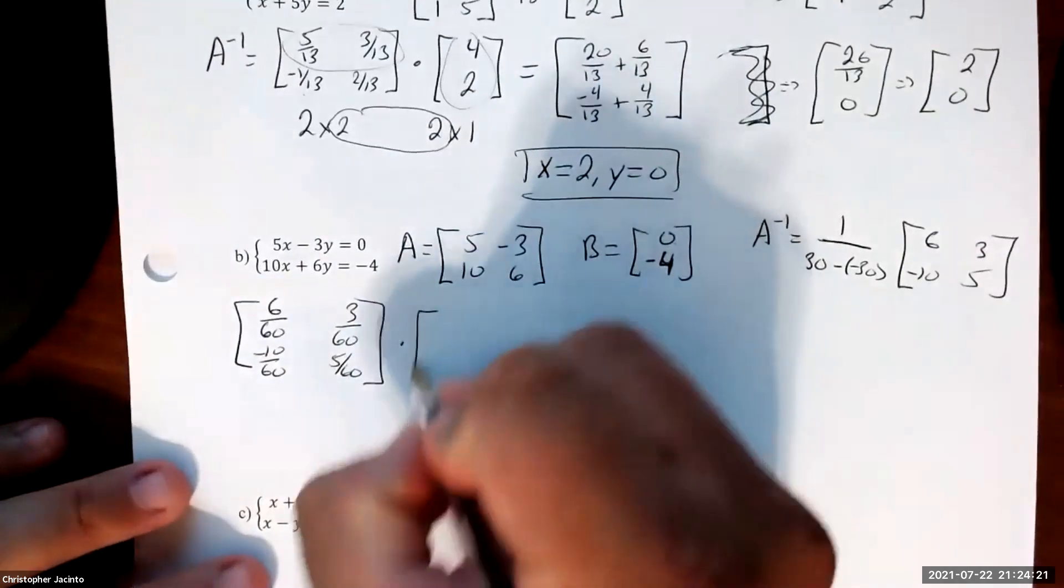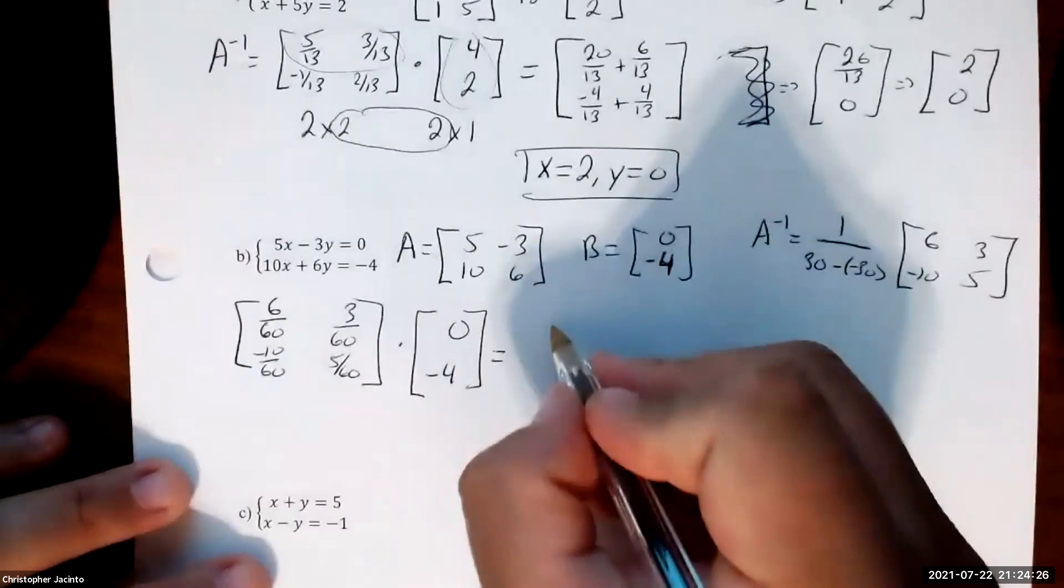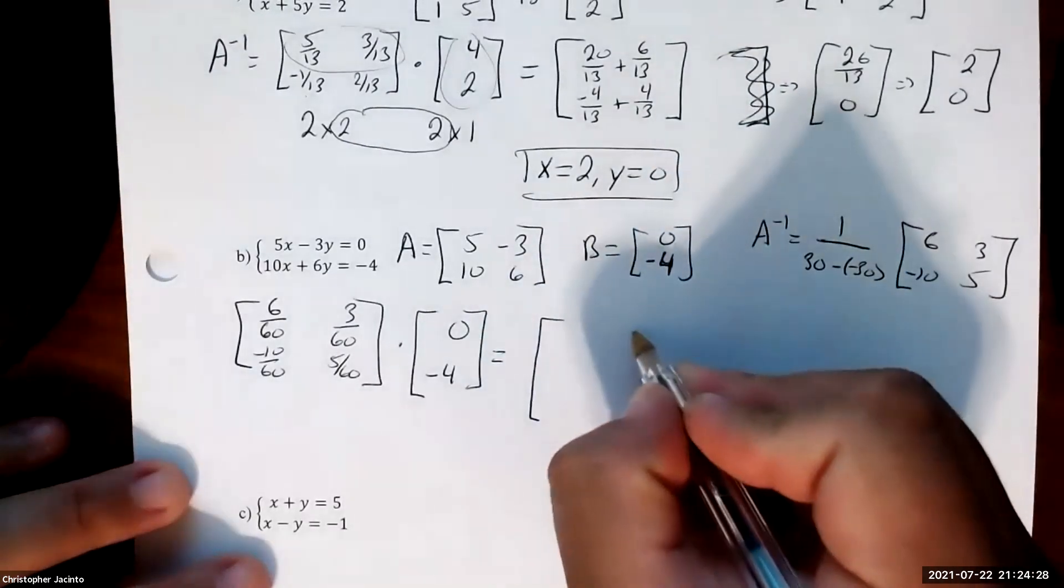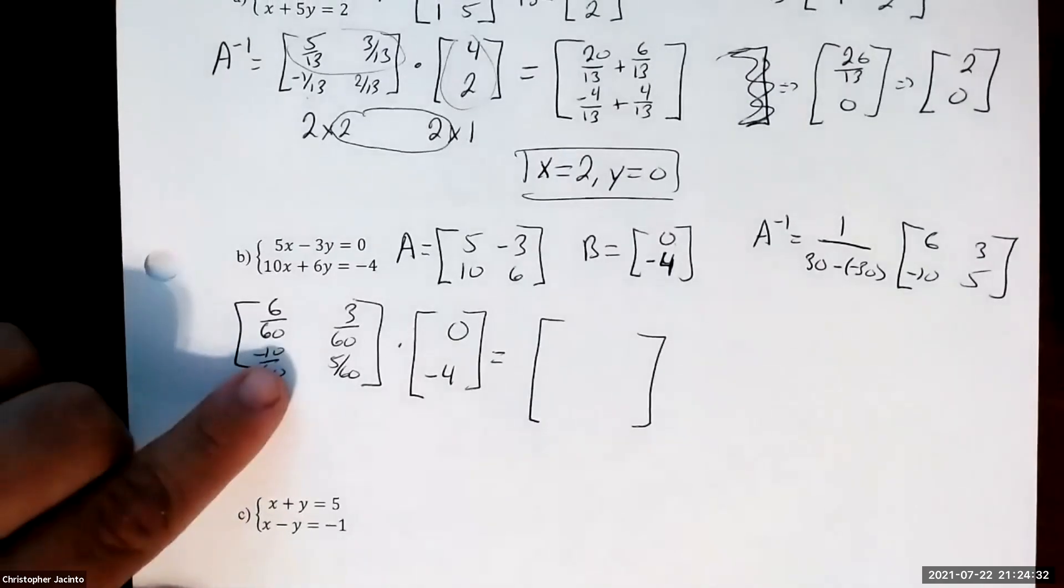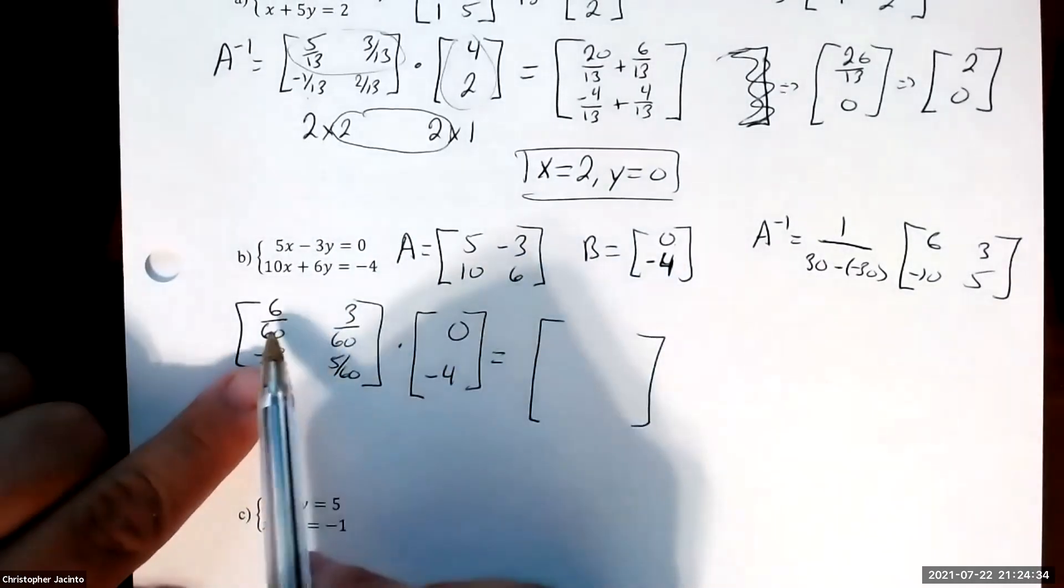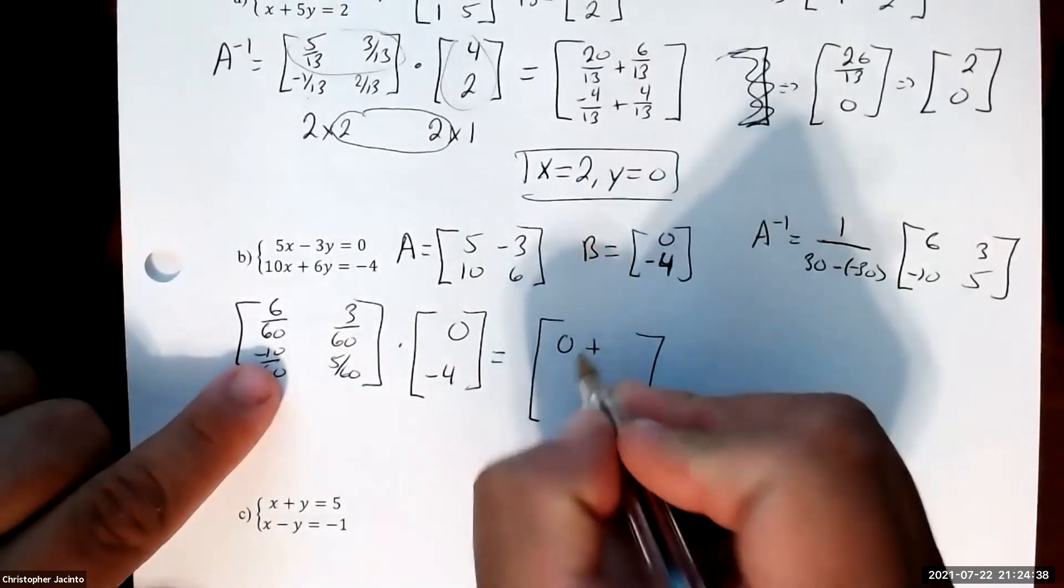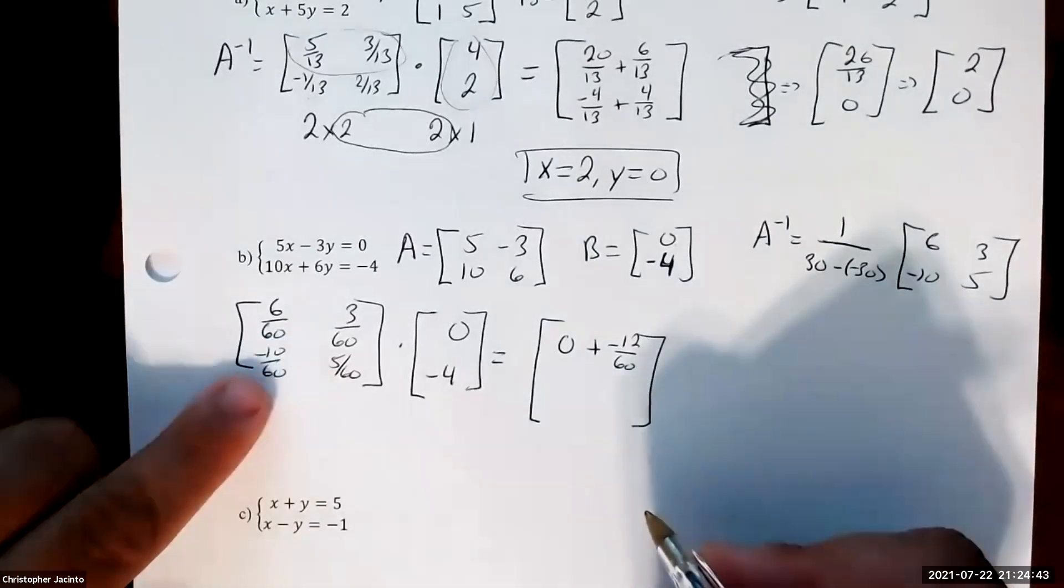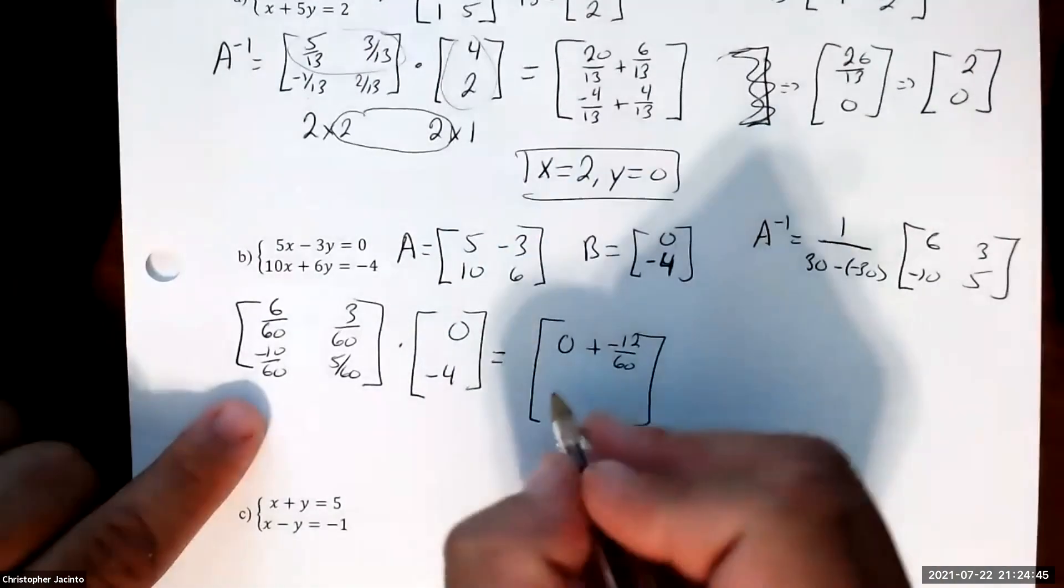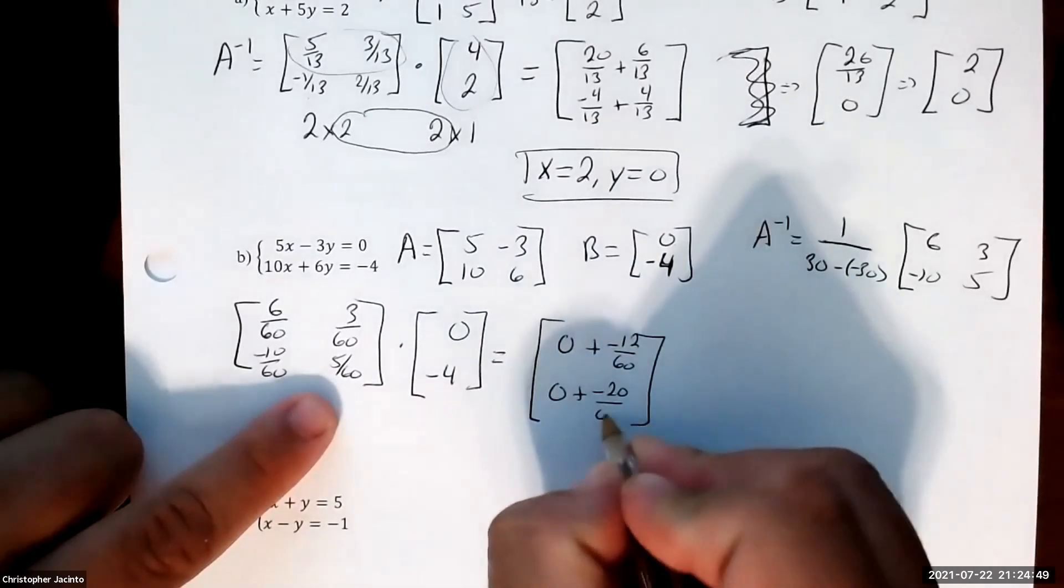Alright, so now it's going to be this times our B, which is 0 and negative 4. The first one is going to be nice. 0 times anything is 0, so that's just a big fat 0 plus negative 12 over 60. Next one is 0 plus negative 20 over 60.